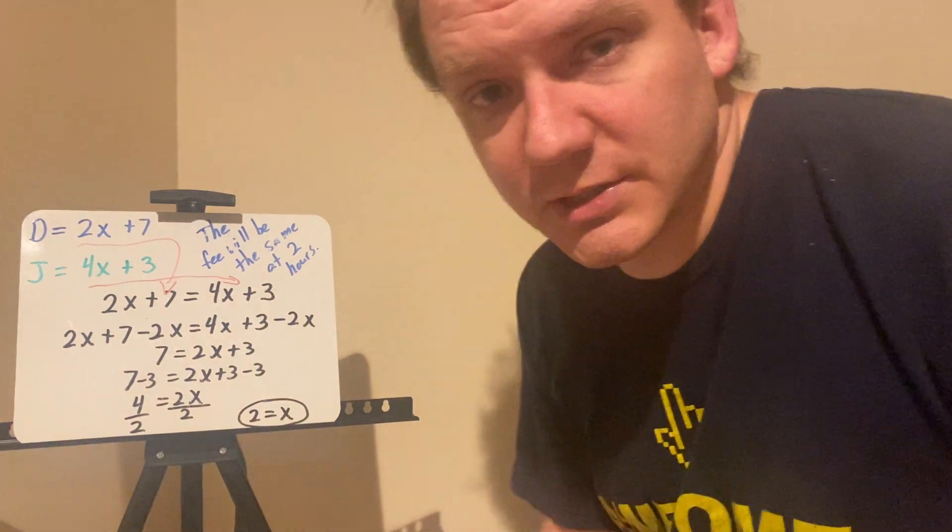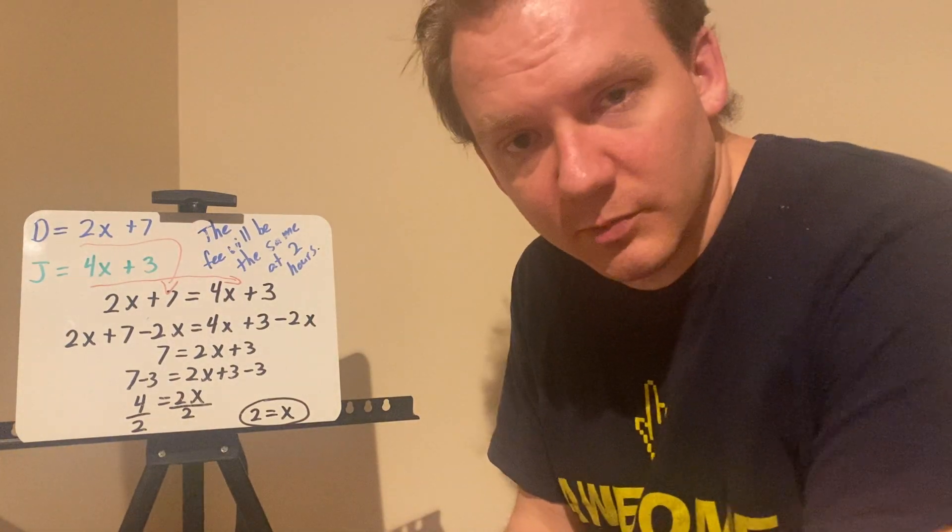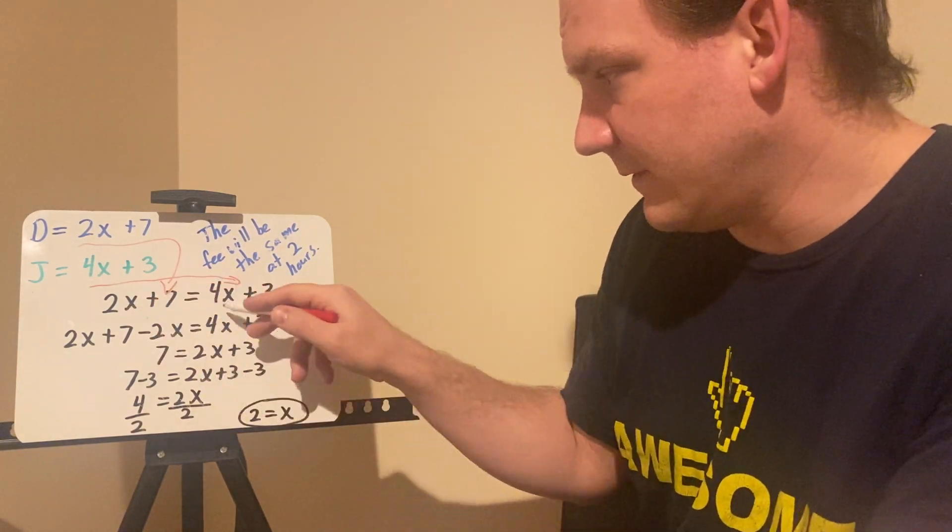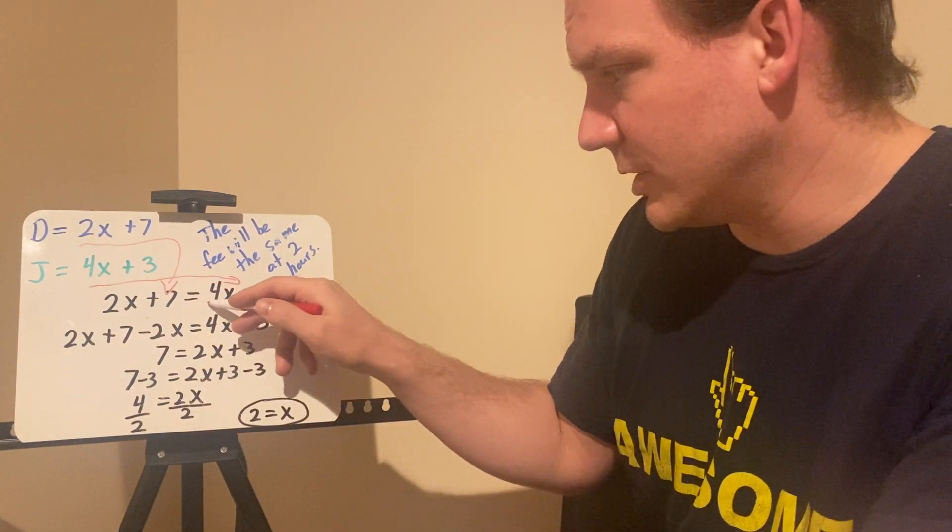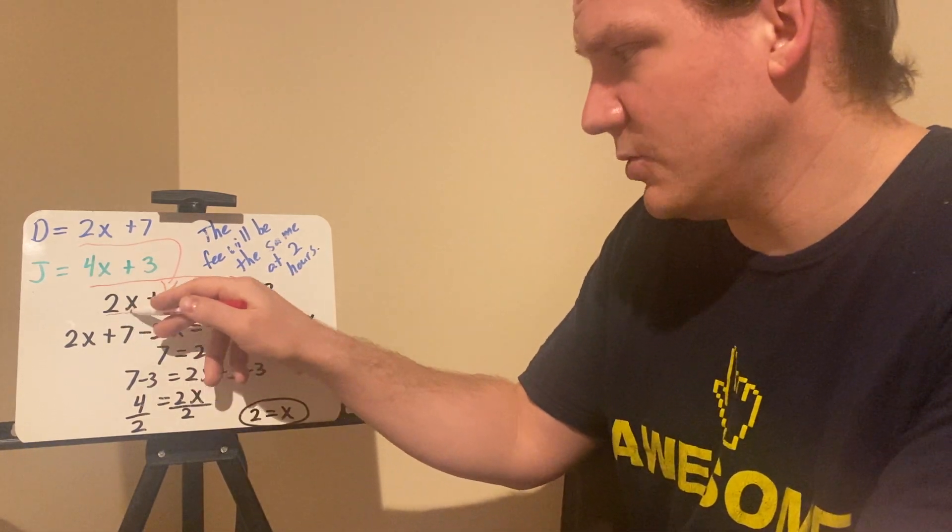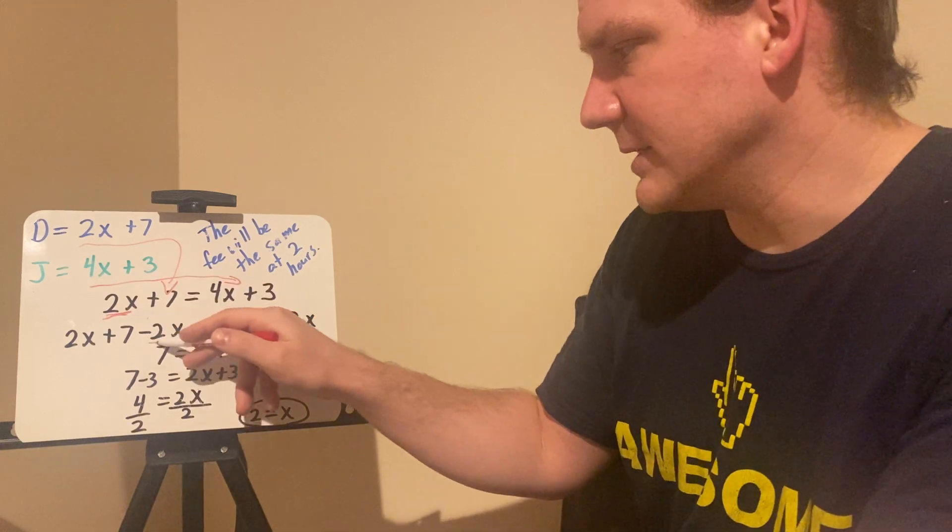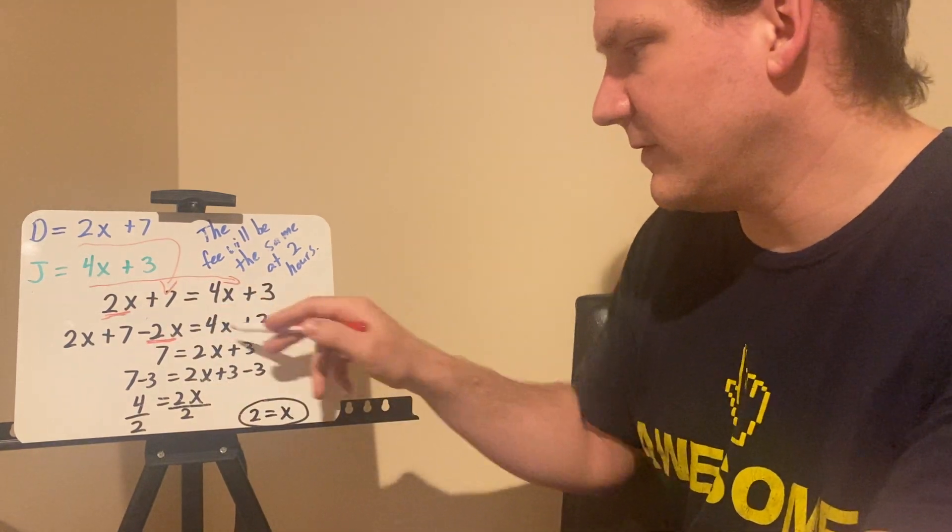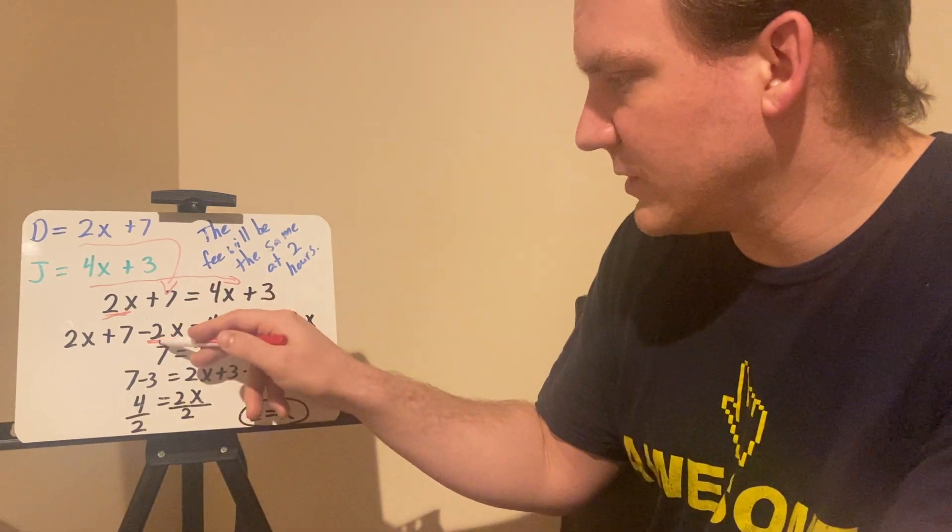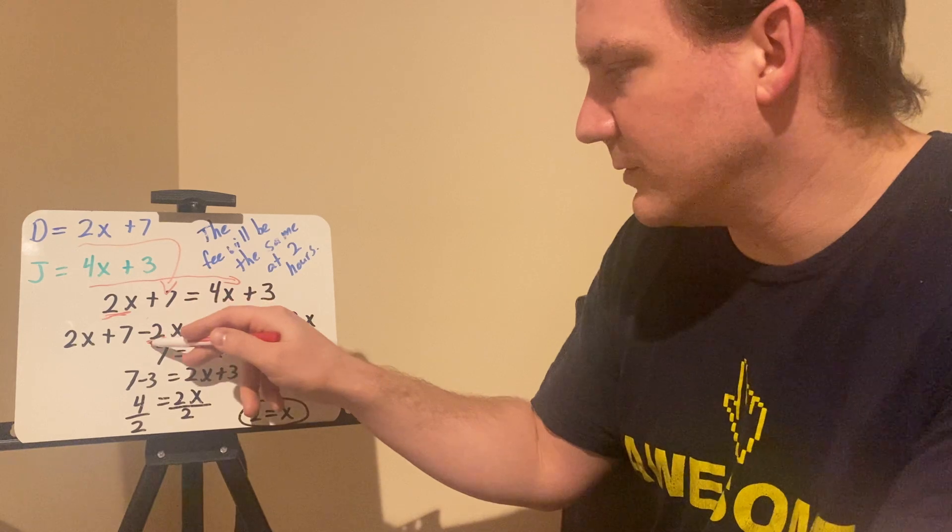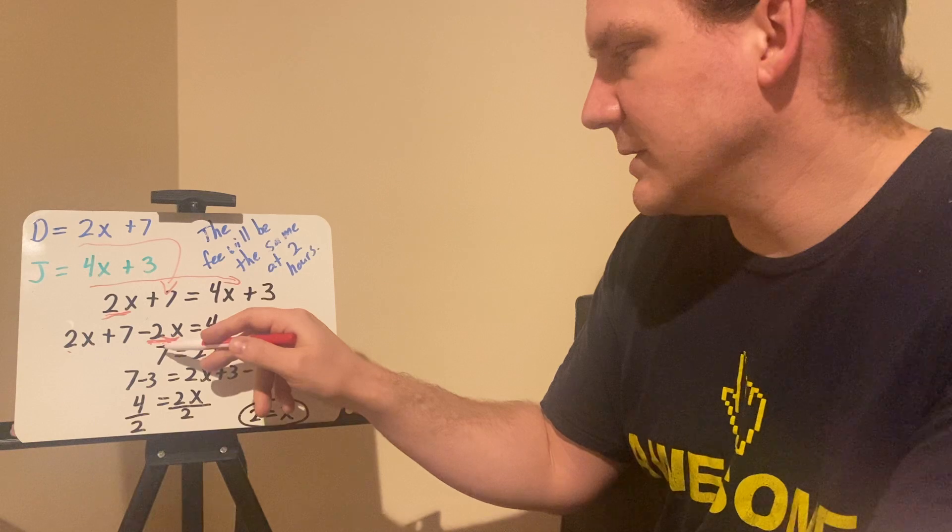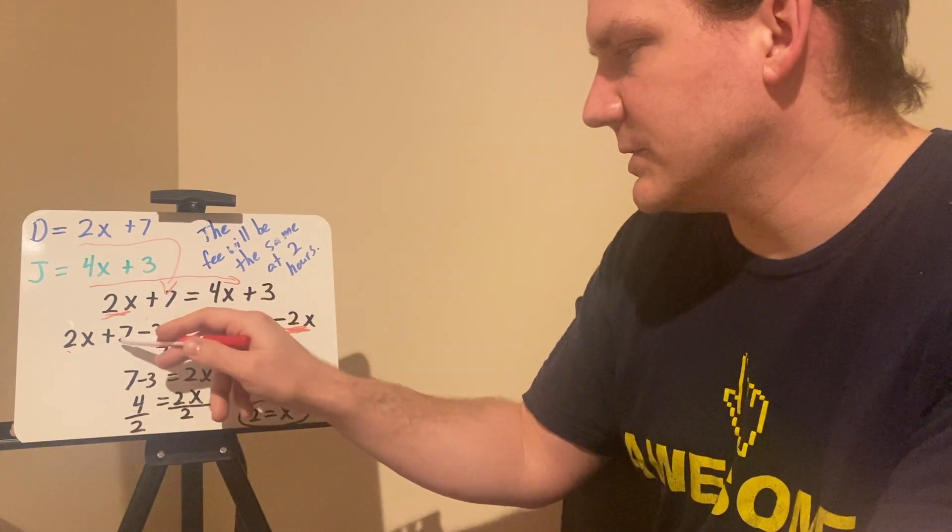I use inverse operations to isolate my variable to one side. In order to do that, I say, okay, this x has a larger coefficient. I'd like to keep it positive. This x is smaller, so I subtract 2x from both sides. I subtract 2x here and 2x here. If I do that, I maintain equality. So since I'm using the inverse operation and the equality property of subtraction, if I subtract the same things from both sides of this equation, it stays equal. 2x minus 2x is going to be zero, so it's just seven.